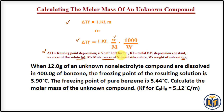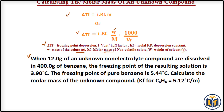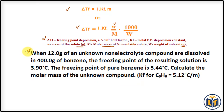In this problem I will show you how to calculate the molar mass of an unknown compound using this formula. The problem states: when 12.0 grams of an unknown non-electrolyte compound are dissolved in 400.0 grams of benzene — the solute is the unknown compound and benzene is the solvent — a solution is formed.